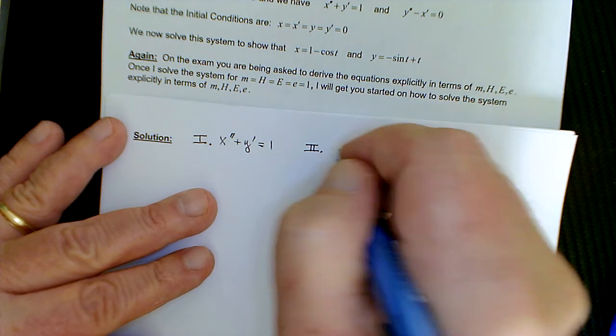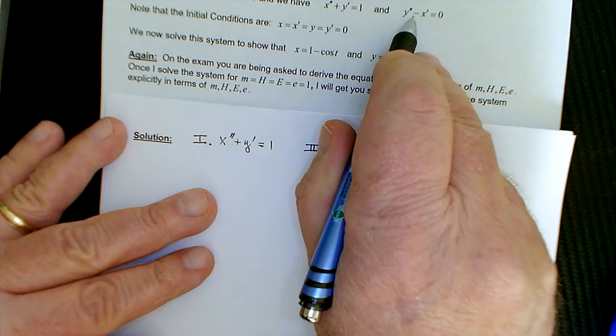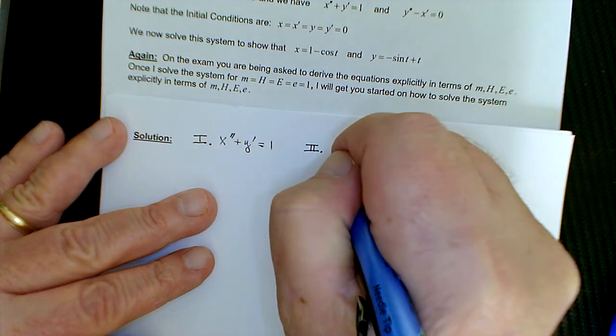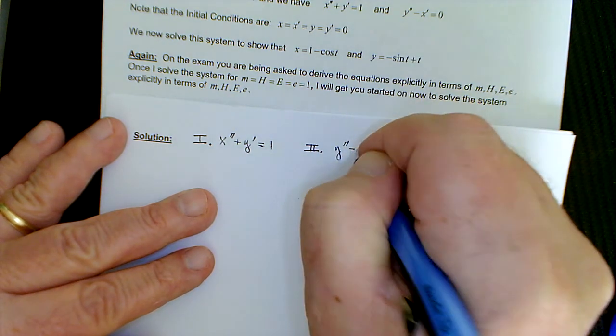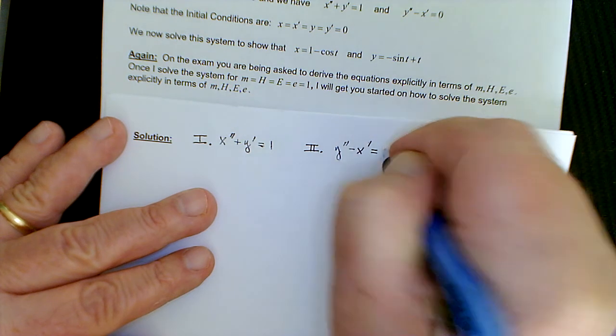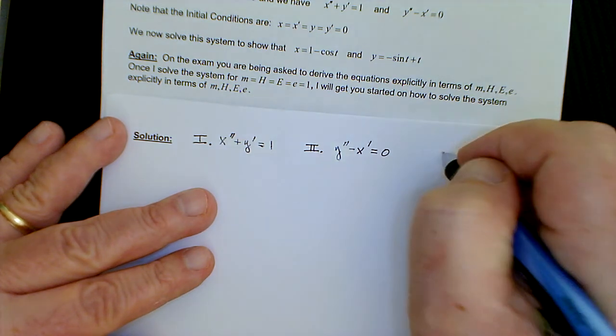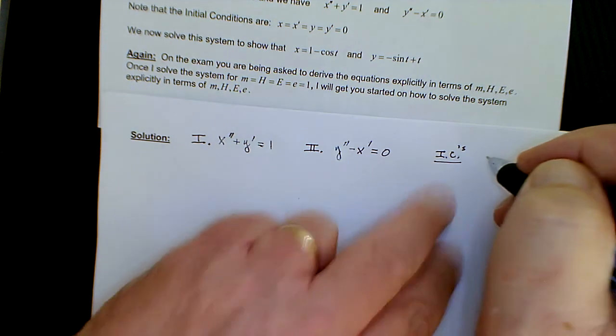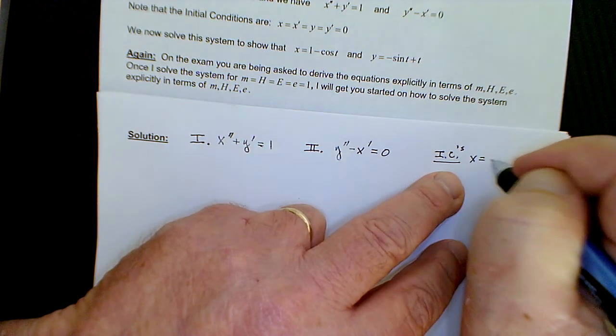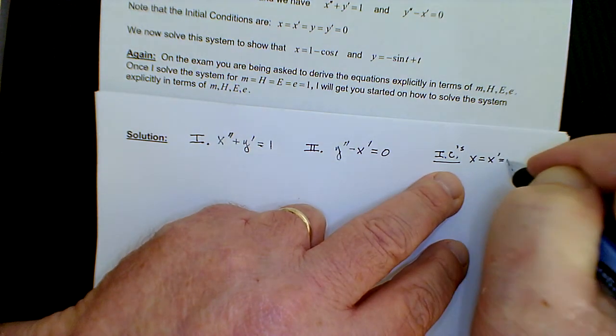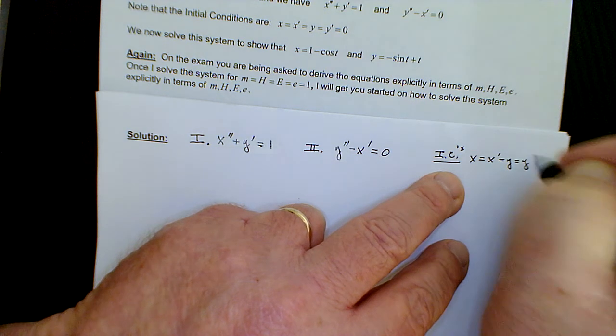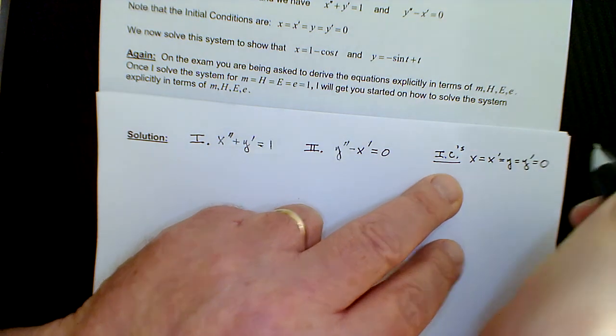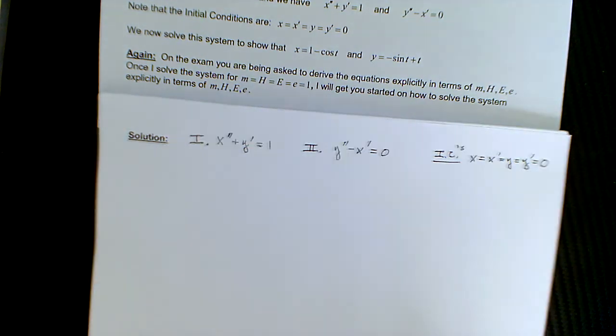The original equations are x double prime plus y prime is 1. I'm going to label that Roman numeral 1. Roman numeral 2 will be y double prime minus x prime is 0. And off to the side, let me state the initial conditions so I don't forget. They were that x equals x prime equals y equals y prime, everything taken to be 0.